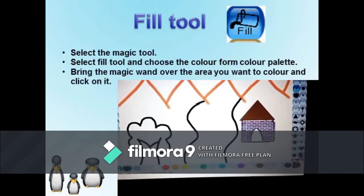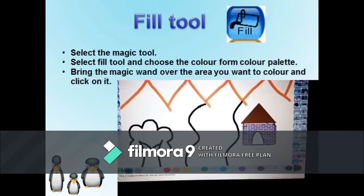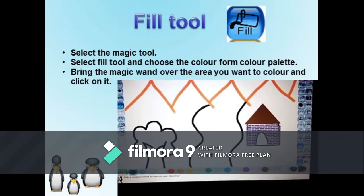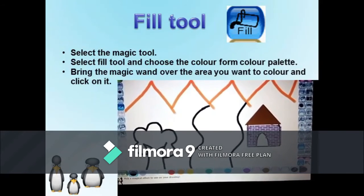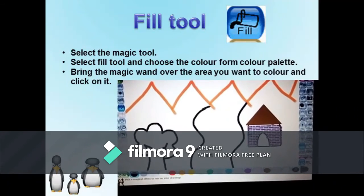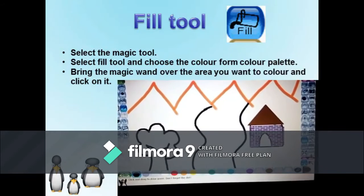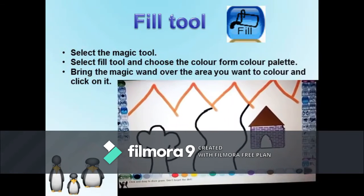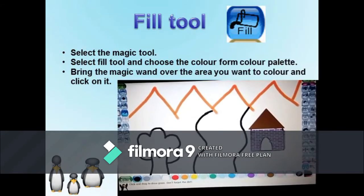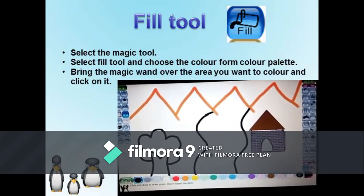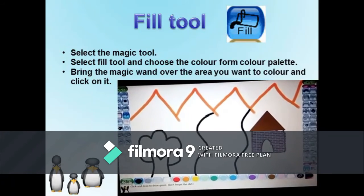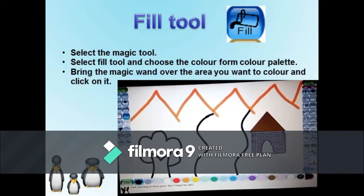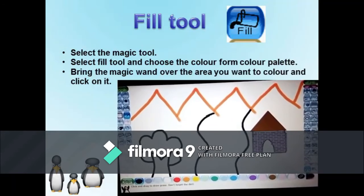Using Fill Tool: It is used to fill color in an object. Select the magic tool, then select the fill tool and choose the color from the color palette. Now bring the magic wand over the area you want to color and click on it. The color will get applied to the picture.